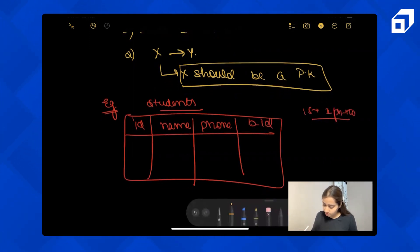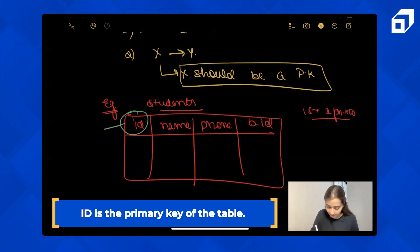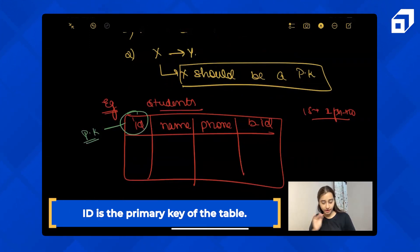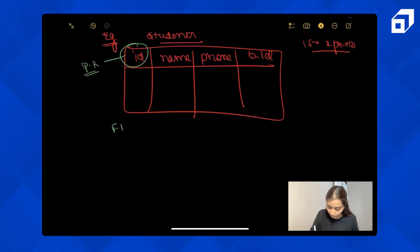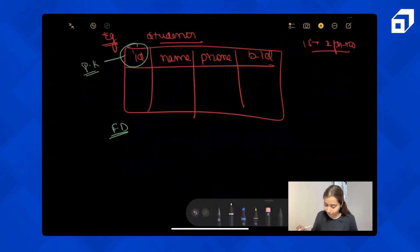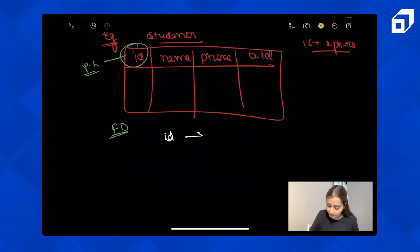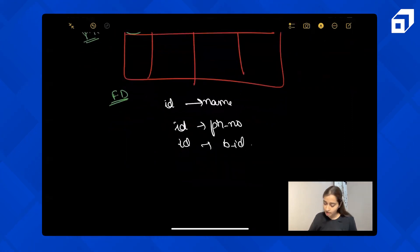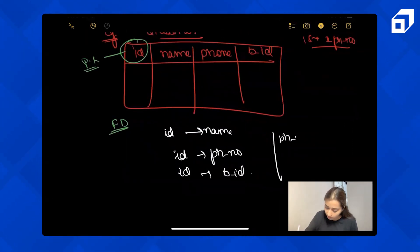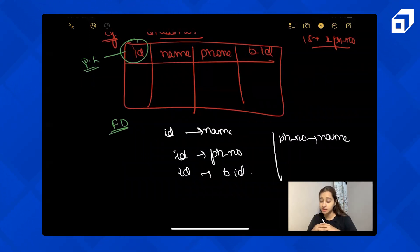First of all, the primary key of this table is ID. Now let's write all the functional dependencies. From ID, I can get their name. From ID, I can get their phone number. From phone number, can I get their name? Yes, because phone number is also unique. No two students can have the same phone number.